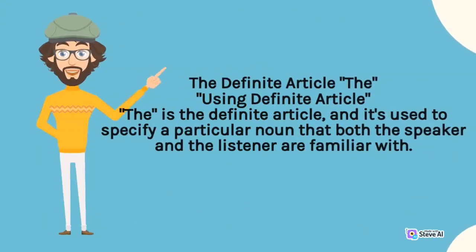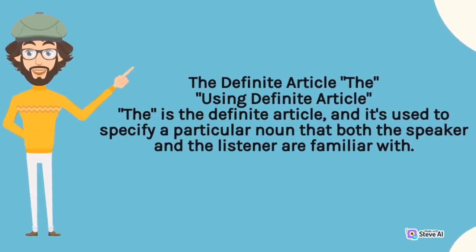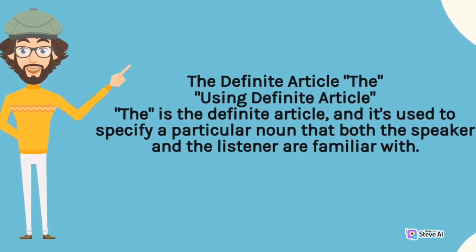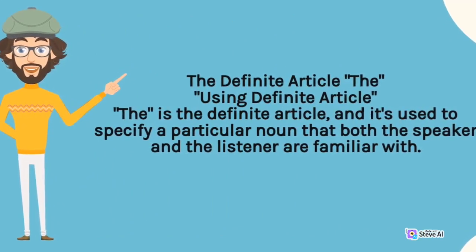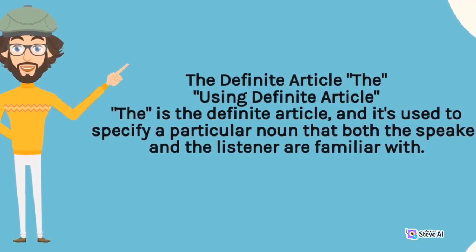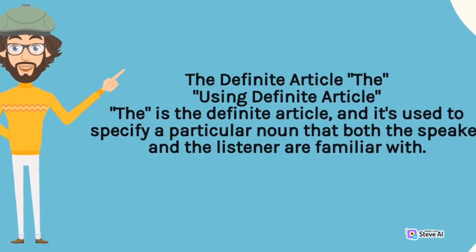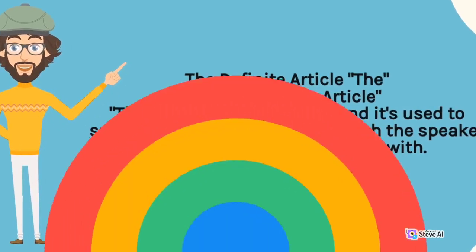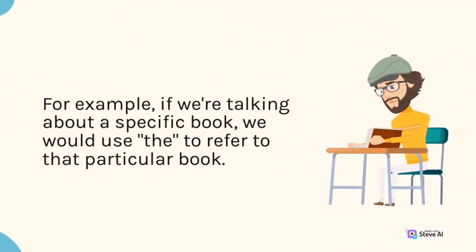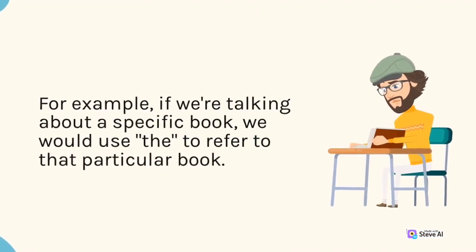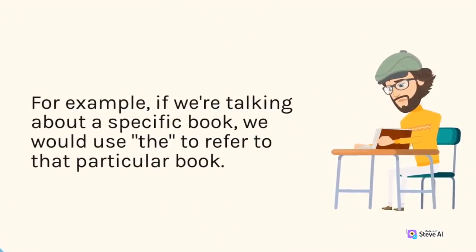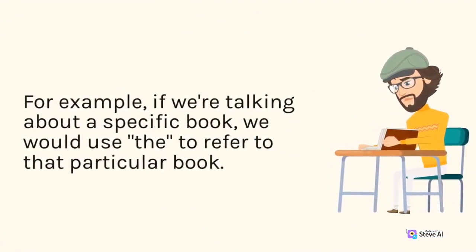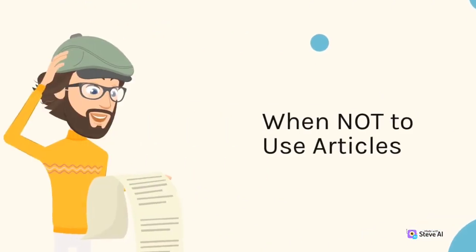The definite article: The. The is the definite article, and it's used to specify a particular noun that both the speaker and the listener are familiar with. For example, if we're talking about a specific book, we would use the to refer to that particular book.